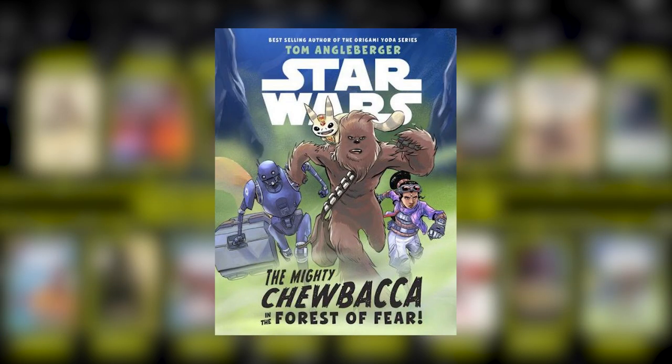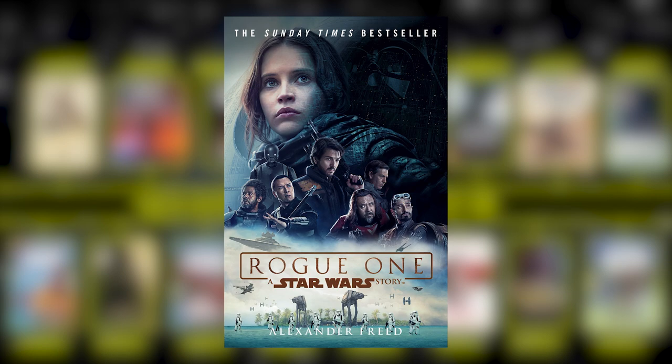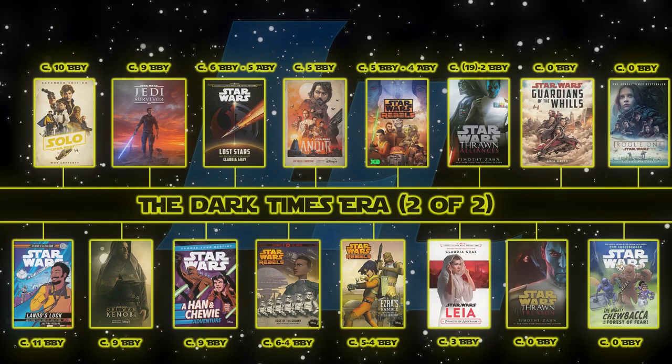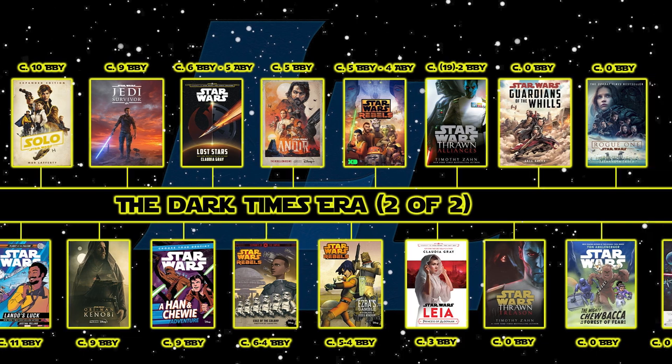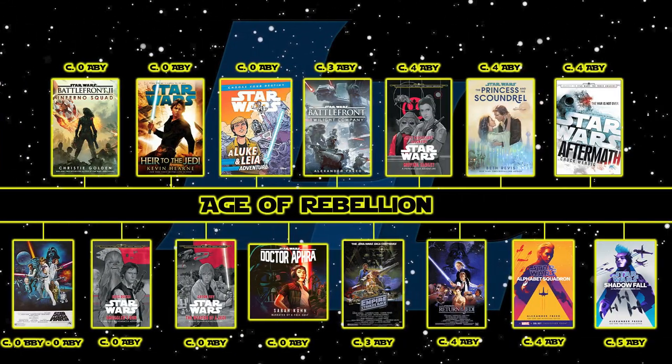After that, you would read The Mighty Chewbacca and the Forest of Fear by Tom Angleberger, another junior novel following Chewbacca. That is followed up with Rogue One: A Star Wars Story — Expanded Edition by Alexander Freed, the novelization of the film of the same name. And that takes us away from the Dark Times era into the Age of Rebellion.